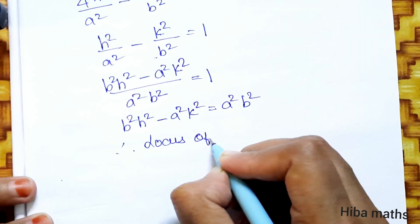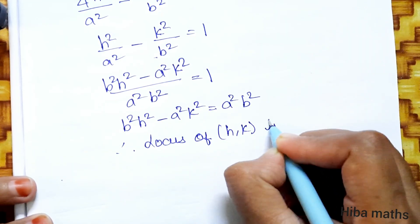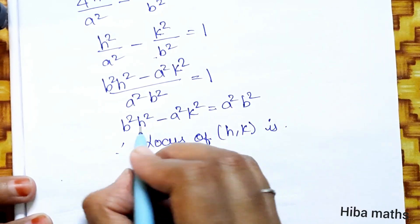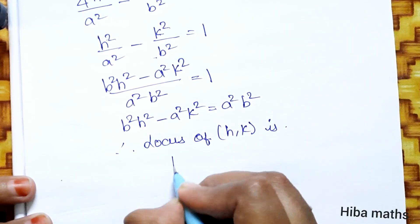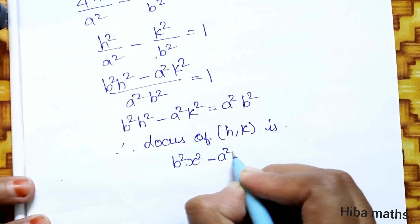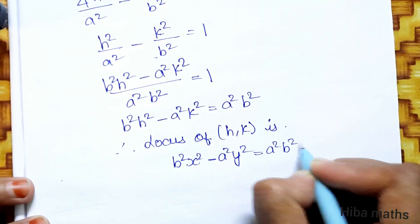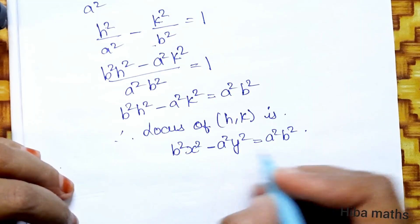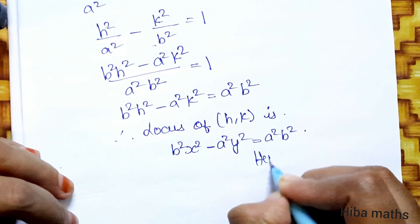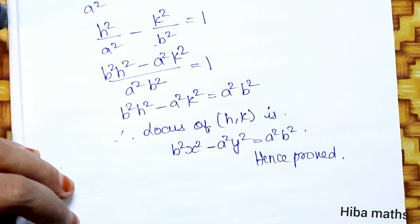Therefore, the locus of P(h, k) is b²x² - a²y² = a²b². Hence proved. Thank you so much for watching.